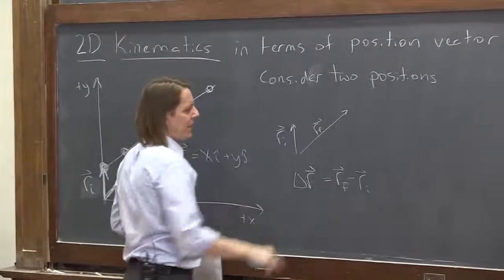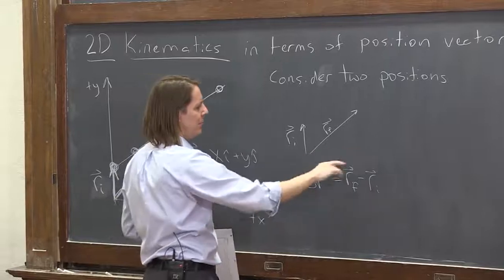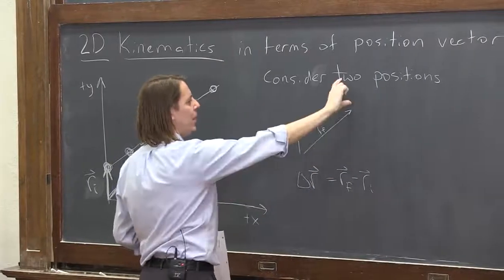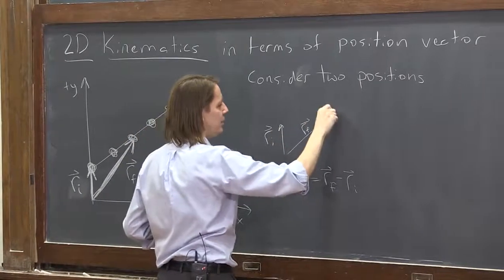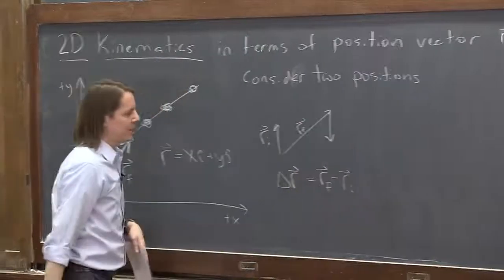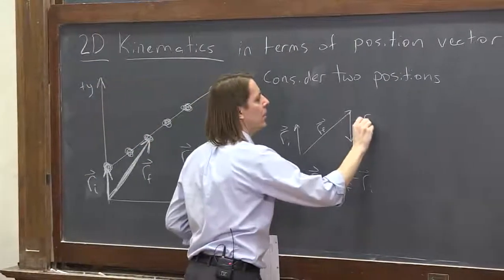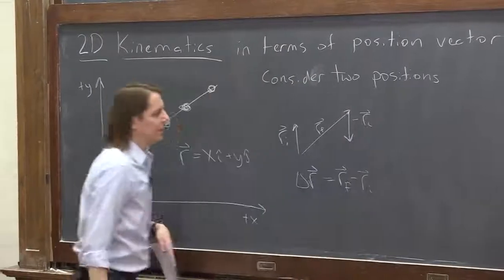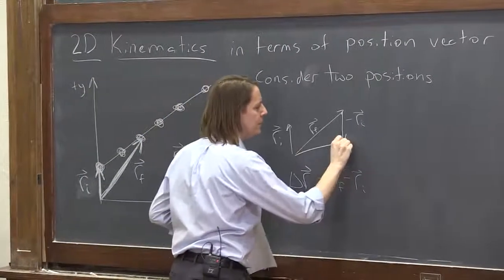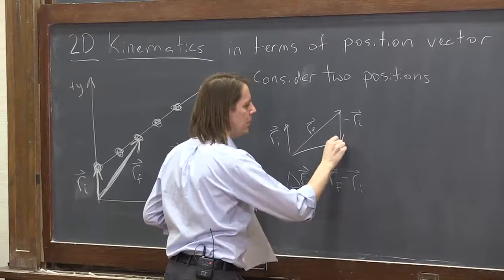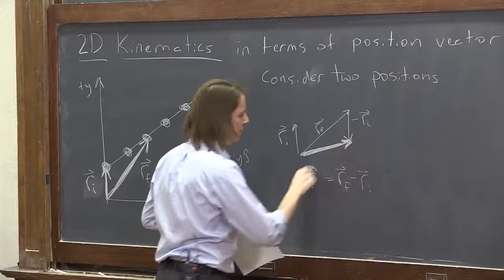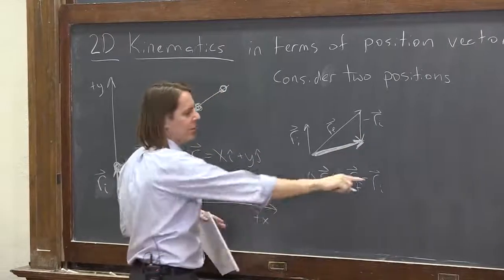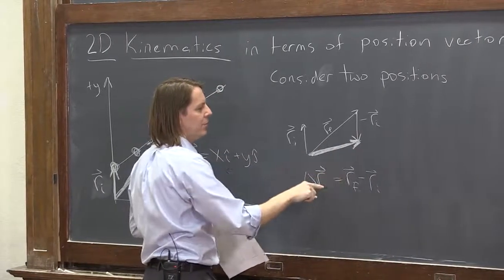So if we want to vector add these but subtract them, you would say rf and then you would add ri, but you'd flip it over. You'd make it go negative. So ri is basically going to be like that. That's negative ri. And then vector add those, and it looks like this. That is delta r. That's rf minus ri.